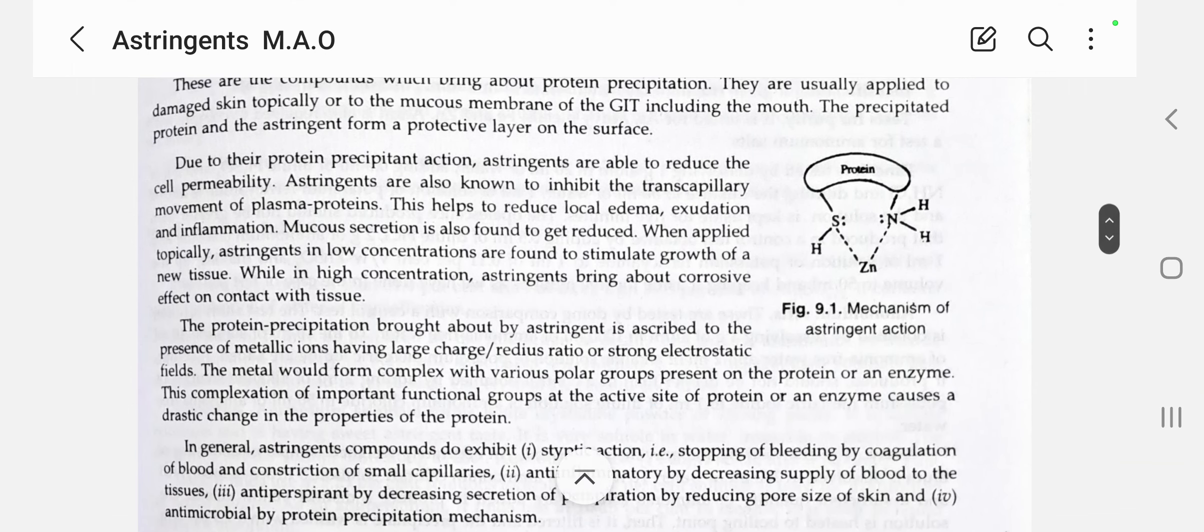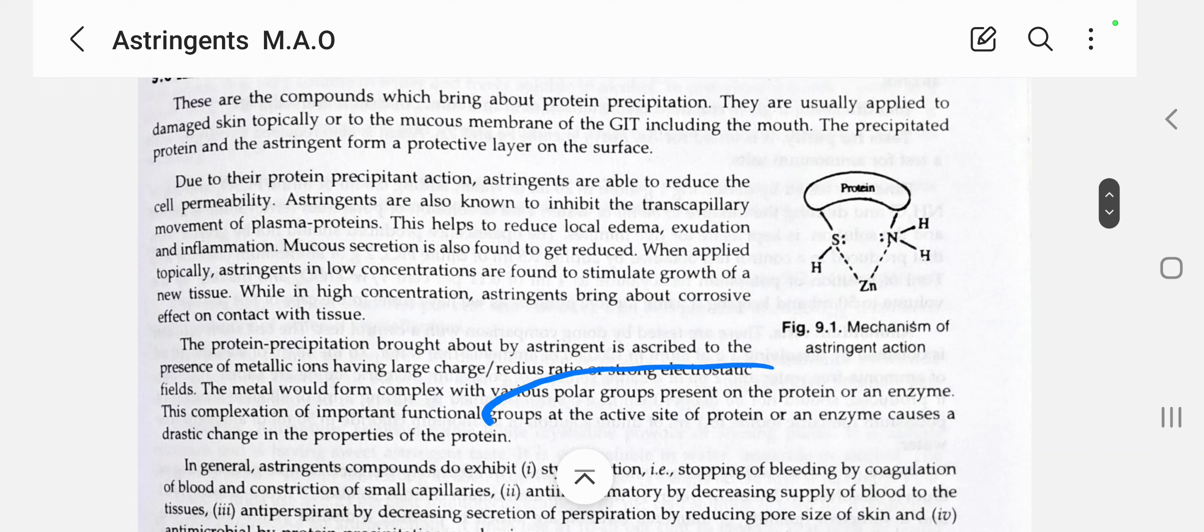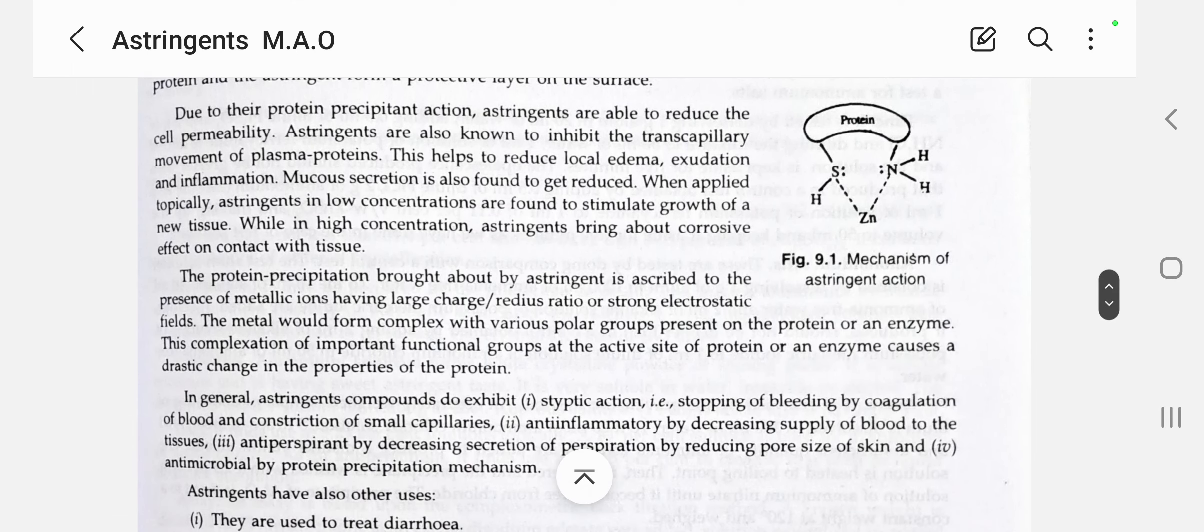The protein already has various polar groups present. These polar groups react with metals like alum or zinc sulfate to form complexation. The complexation of important functional groups at the active site of proteins or enzymes causes a drastic change in the properties of the protein. Here you may see the mechanism of action of astringent action.